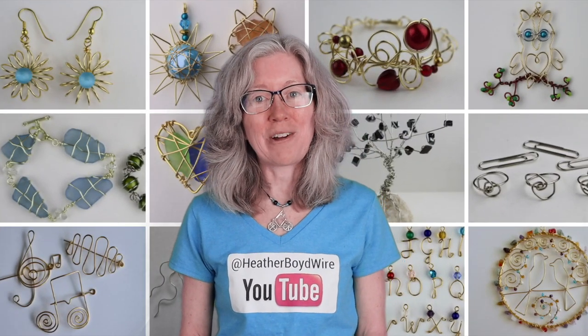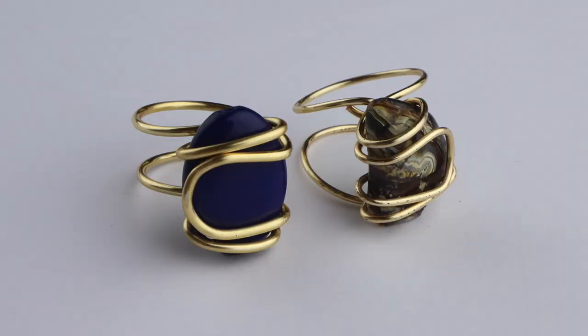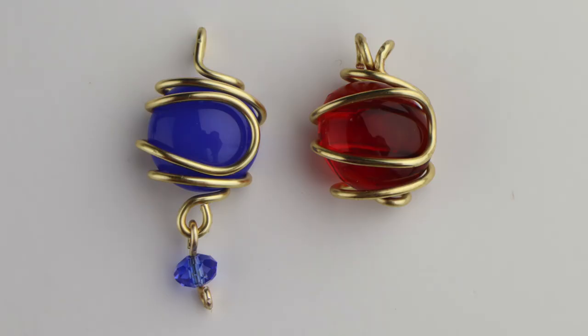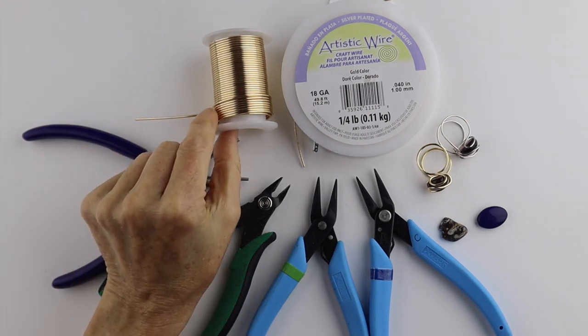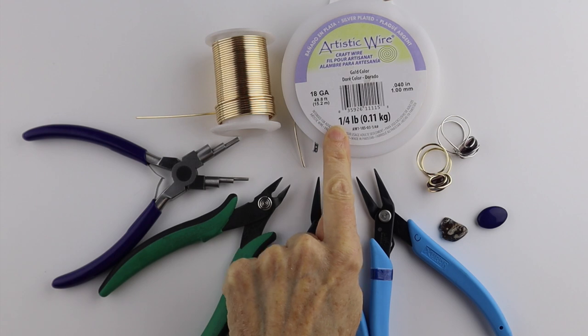Hello LiveWires, Heather Boyd Wire here. Today I'm going to make some wire wrapped rings inspired by the wire wrap pendants that I made with the 16 gauge wire. What you're going to need for this project is your wire. I have 16 gauge. You can also get away with 18 gauge.